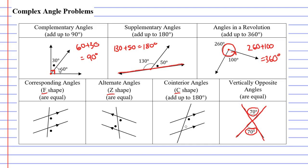Looking at the first one, corresponding angles, you'll notice that we get an F shape when we draw around the angles and that means they are equal to each other. So if the angle above was 100 degrees the angle below would also be 100 degrees.